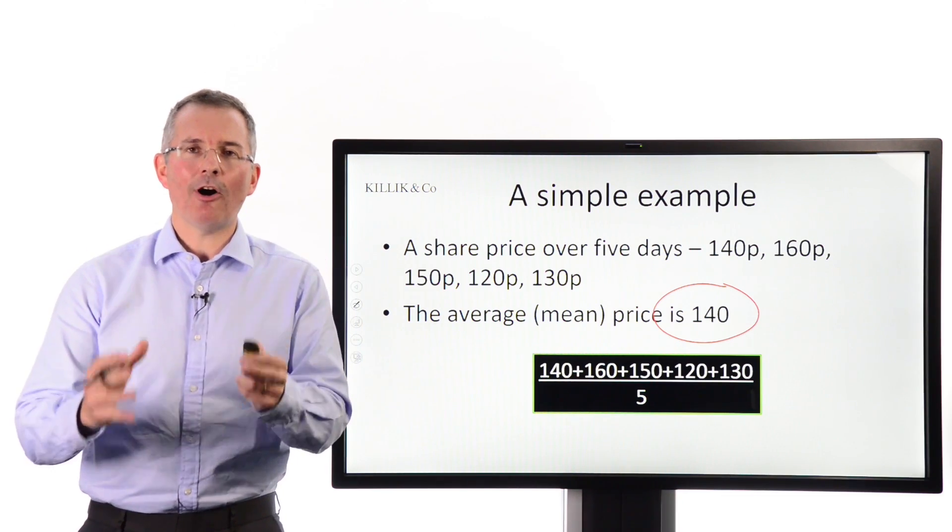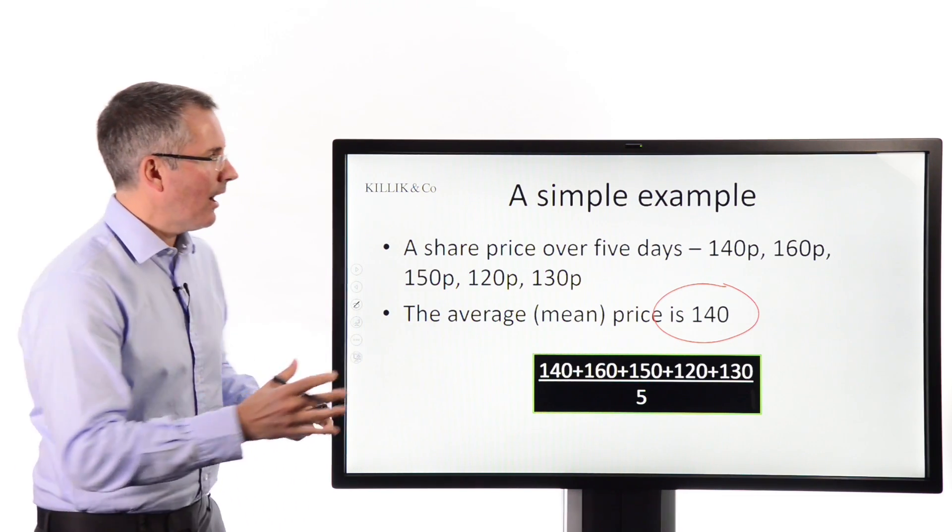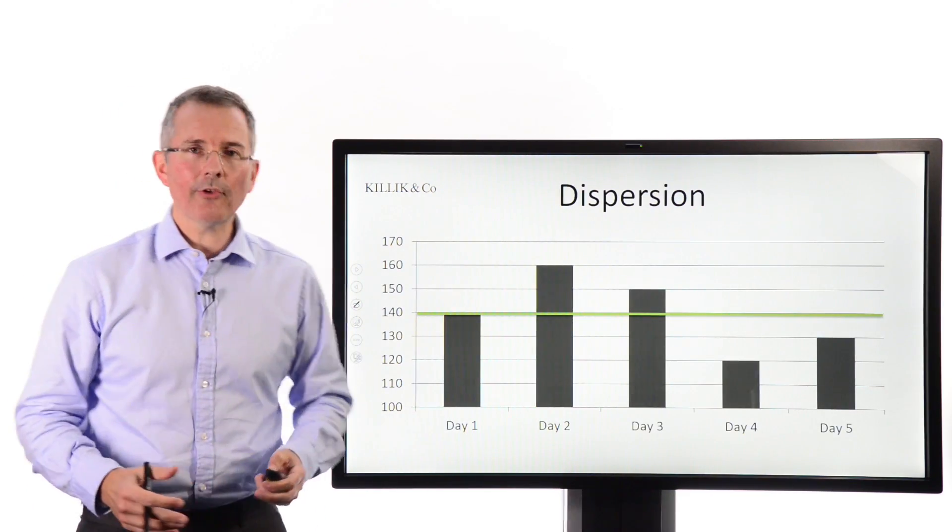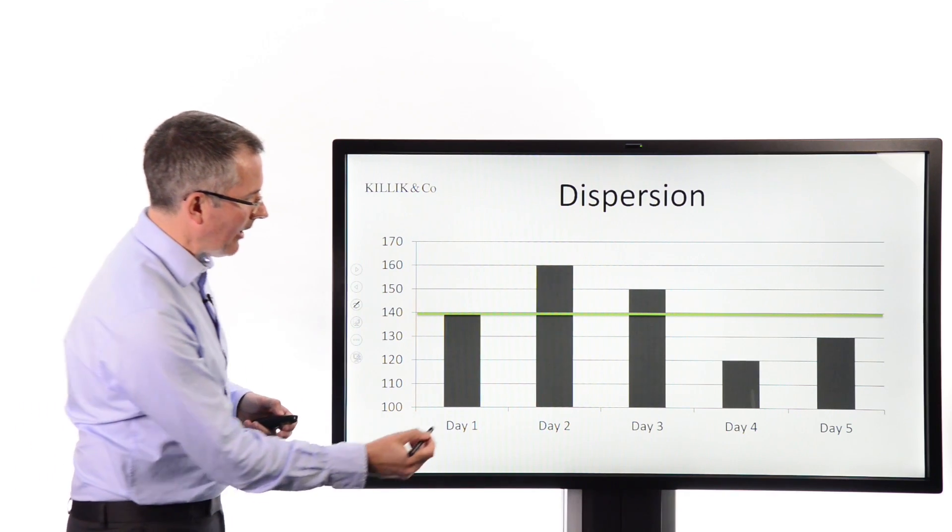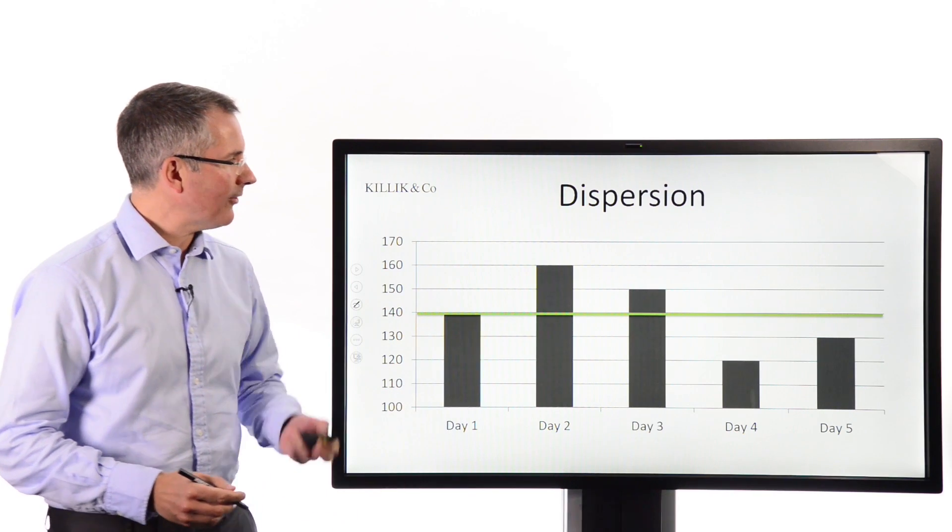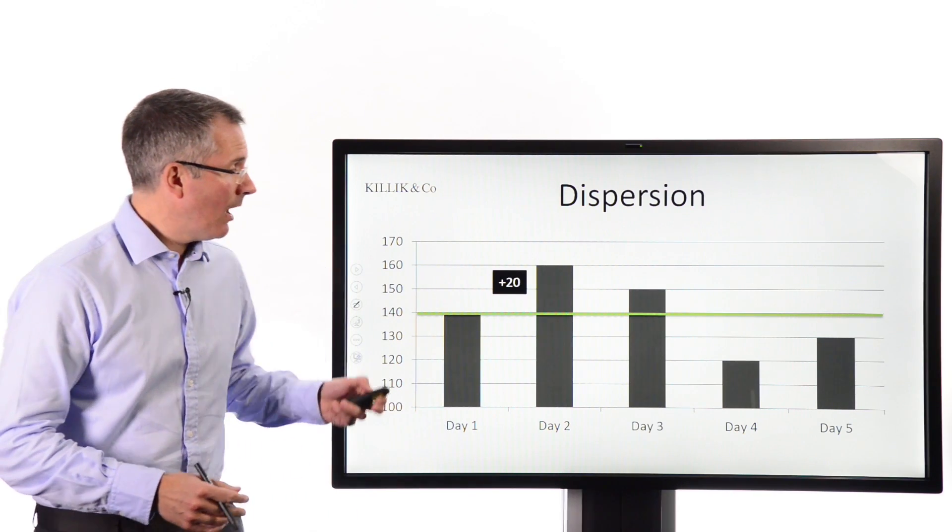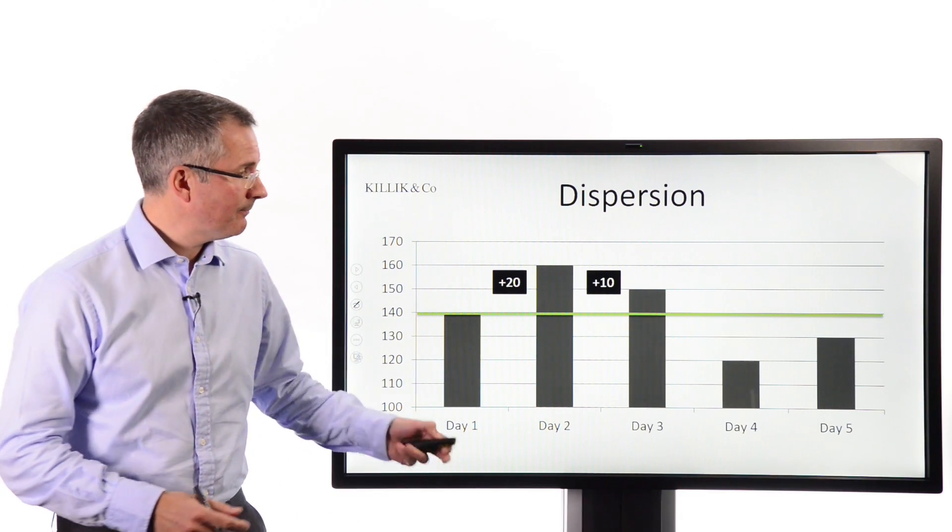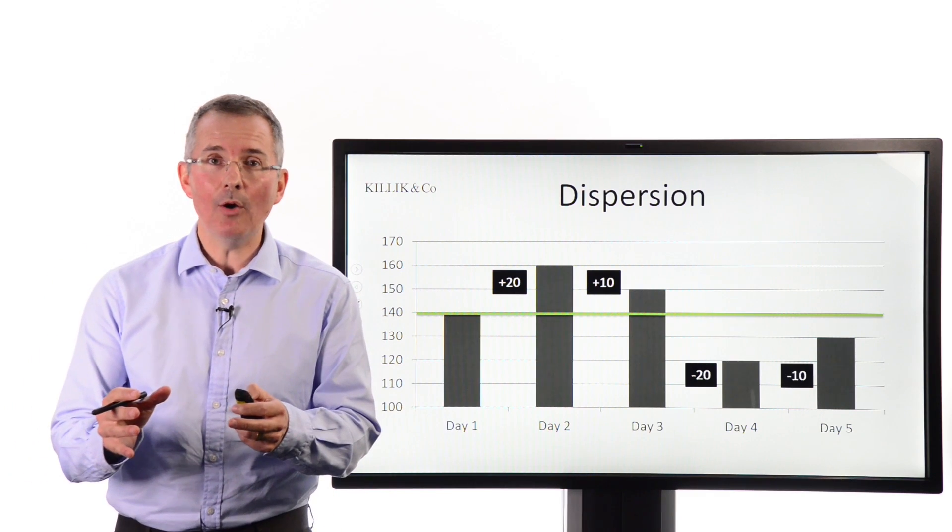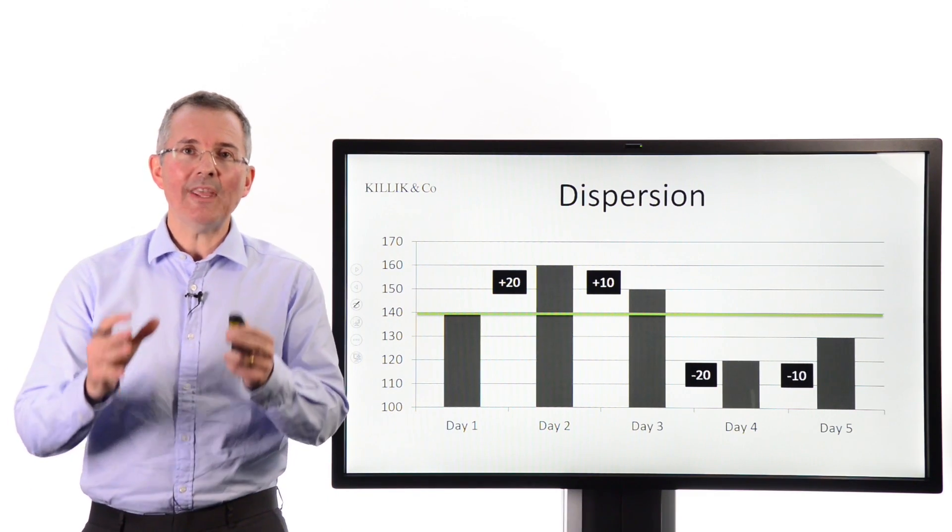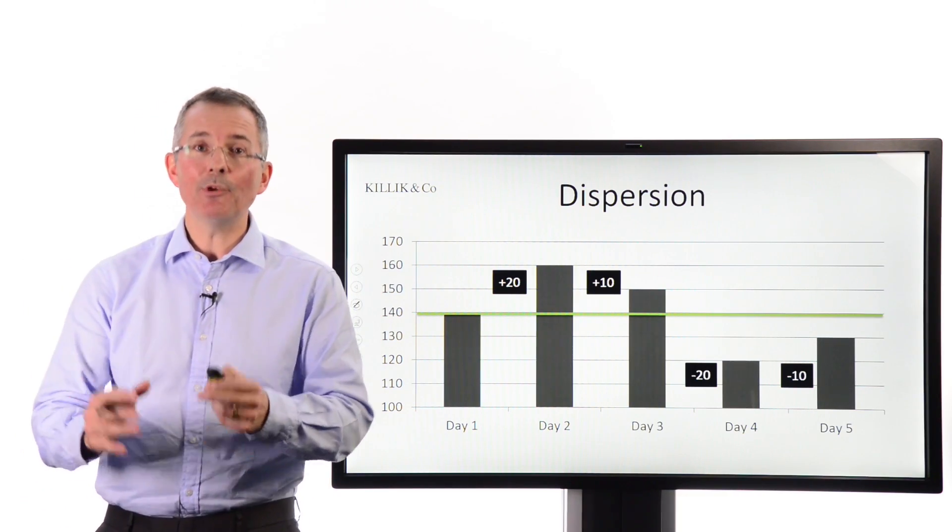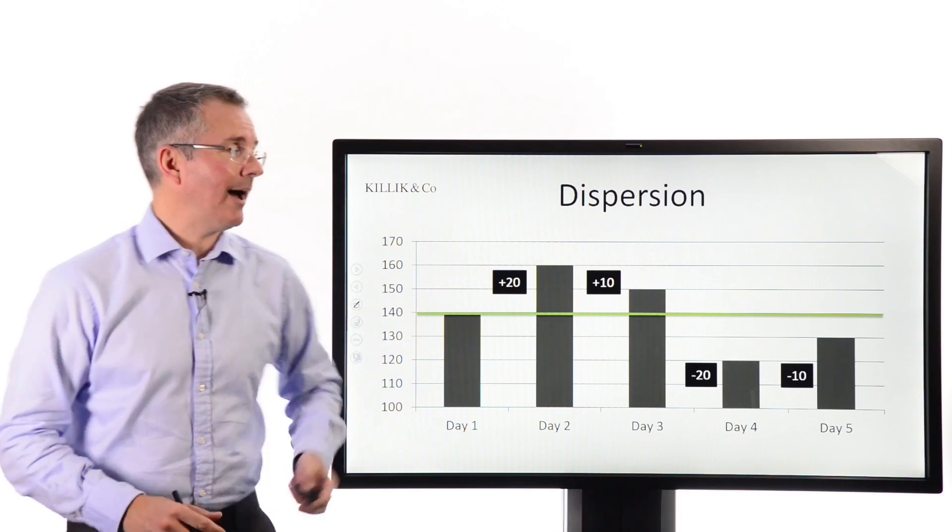Now the question then arises, how far away from the mean are we each day when we look at these share prices? Well, you could do it on a chart. You could say, if we start with day one, day one happens to be the mean, £1.40. £1.60 is 20p over. £1.50 is 10p over. Then we go 20p below and then we go 10p below. Now, what we're looking at is what is the average sort of dispersion of those numbers from the mean, which we decided was £1.40. How are we going to do that?